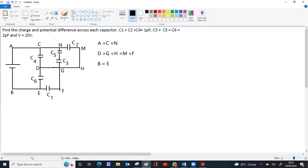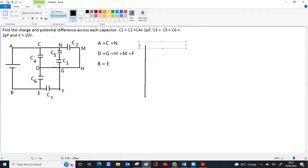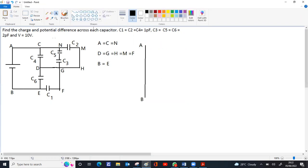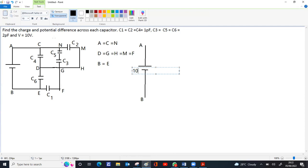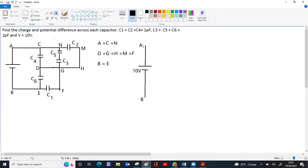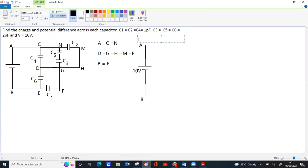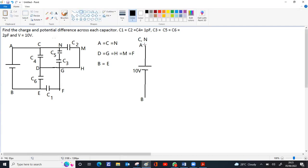So once you redraw this, this is the main circuit. A, B with cell, that is 10 volt. Now this A is same as C and N. What all you draw from A, C, N, all three can be drawn from the single point. So B is same as E.